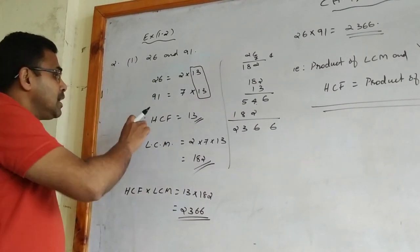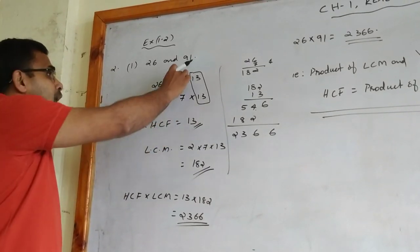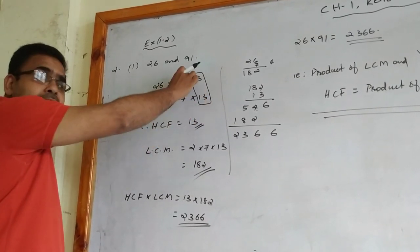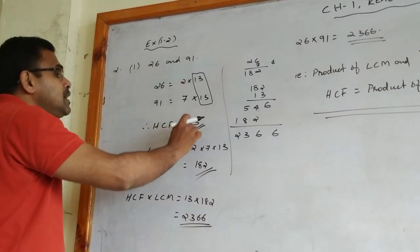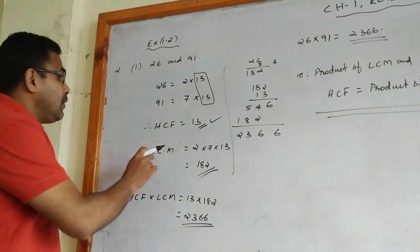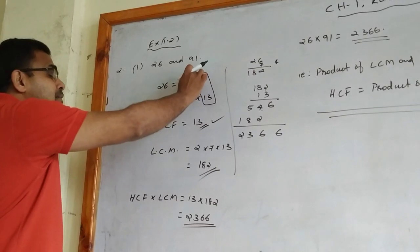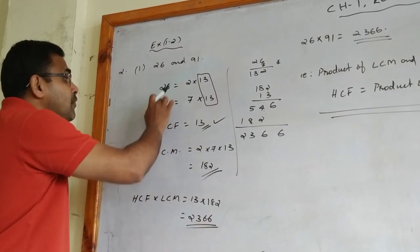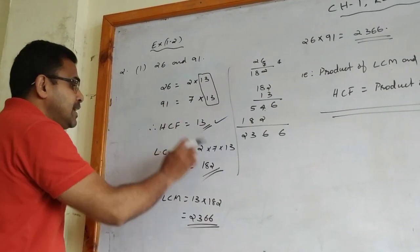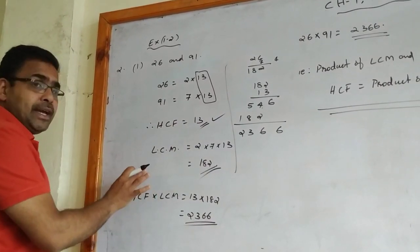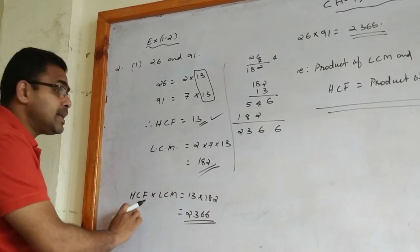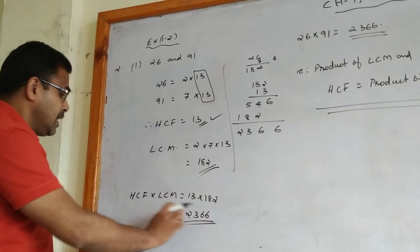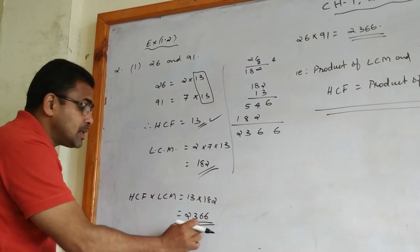Both numbers are now prime factorized. HCF means Highest Common Factor — among the prime factors of both numbers, 13 is repeated in both 26 and 91, so HCF = 13. For LCM: we take 2, 7, and 13 (the repeated one only once) — so LCM = 2 × 7 × 13 = 182. Now we verify: product of HCF and LCM = 13 × 182 = 2366.